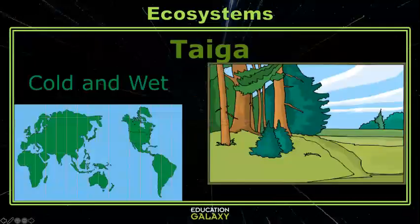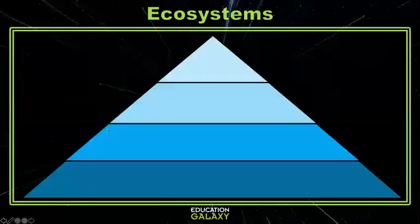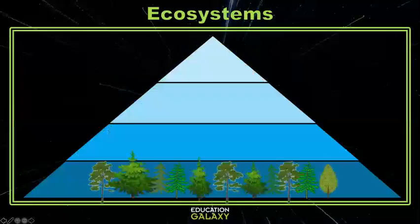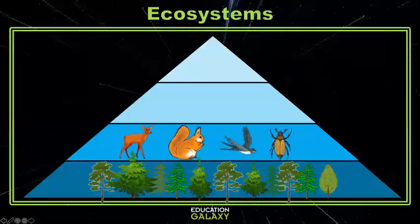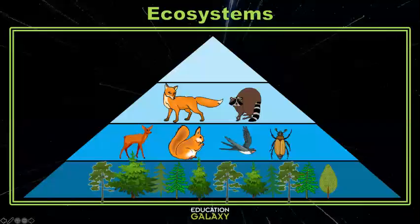Let's move somewhere slightly warmer. The taiga, or coniferous forest, is still pretty cold, but it's a lot closer to home and covers most of Canada. Here we have a good amount of precipitation and temperatures that, while still pretty cold, change seasonally. Let's look at an energy pyramid. Most of the producers here will be conifers or evergreen trees like pine trees. Their needles are adapted to the cold. Our primary consumers include deer, squirrels, birds, and insects. For our secondary consumers, we have foxes and raccoons. And our apex predator, or tertiary consumer, could be a large eagle, a grizzly bear, or a gray wolf.